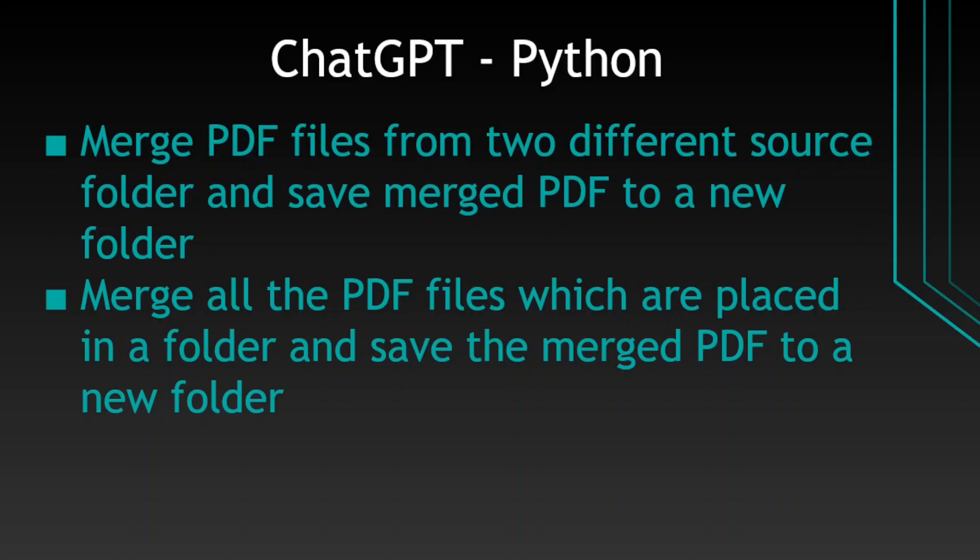In the first scenario we save the merged PDF to a new folder. The second scenario is generating Python code using ChatGPT to merge all PDF files placed in a particular folder and save the merged PDF file to a new folder. These are the two scenarios I'm going to teach you. Now let's jump to the system and see how we can perform these activities using ChatGPT.